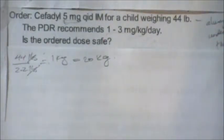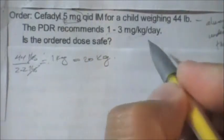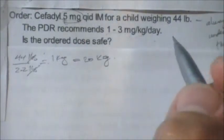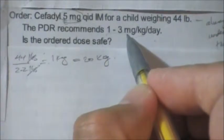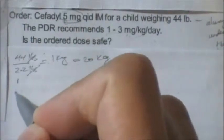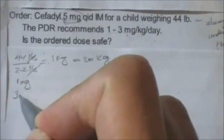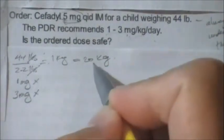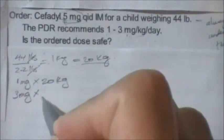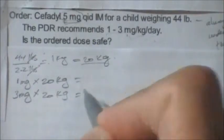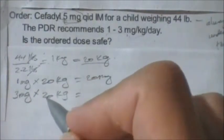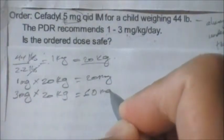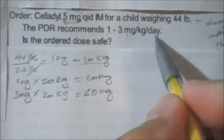The doctor's order is 5 milligrams, so the question is: is that safe? The recommended dose is 1 to 3 milligrams per kilogram per day. So the safe dose range is: 1 mg × 20 kg = 20 milligrams per day at the minimum, and 3 mg × 20 kg = 60 milligrams per day at the maximum.